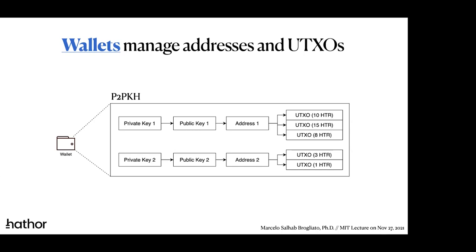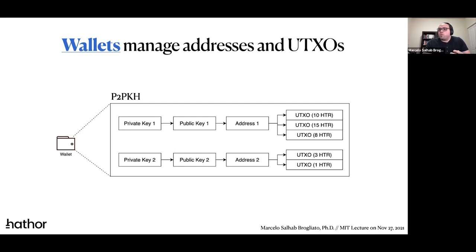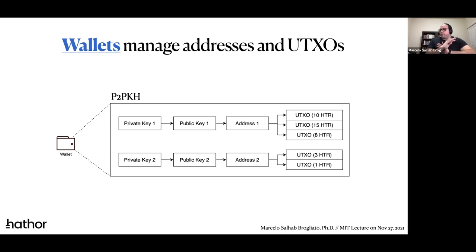Question: what happens if an input needs to spend only part of a UTXO? It's impossible — you cannot partially spend a UTXO. Either it's spent or not spent; there's no in between. What happens is that we create a change in the transaction — we will see more details in a bit. An output has just two possible states: it's either spent or unspent. There's no partial spending.